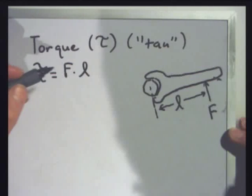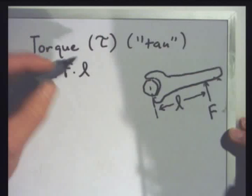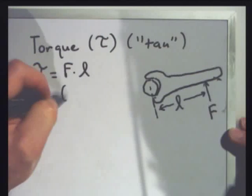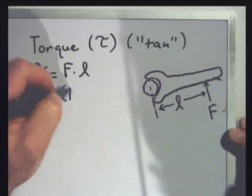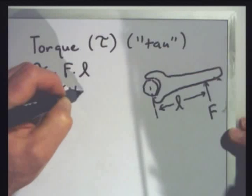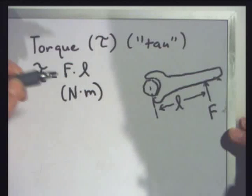Torque is force times moment arm, so it's going to have units of force times moment arm. In metric units, a force is given in newtons, so that would be newtons times the moment arm, which would be meters. So newton meters are one unit.